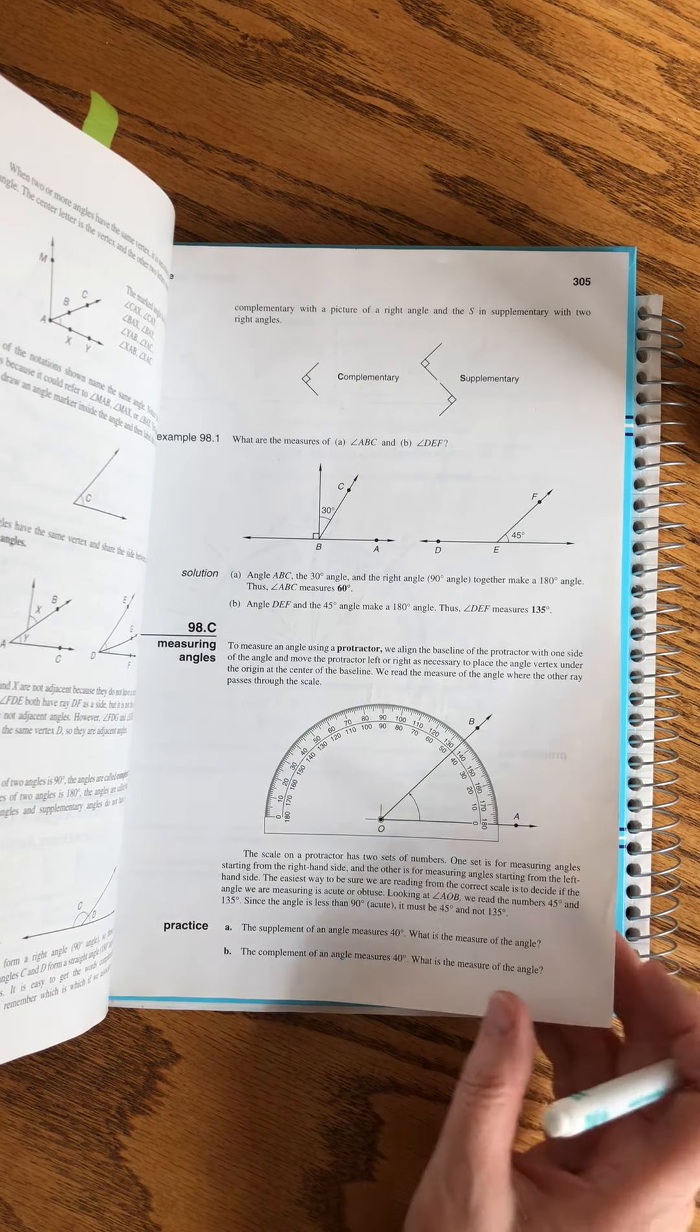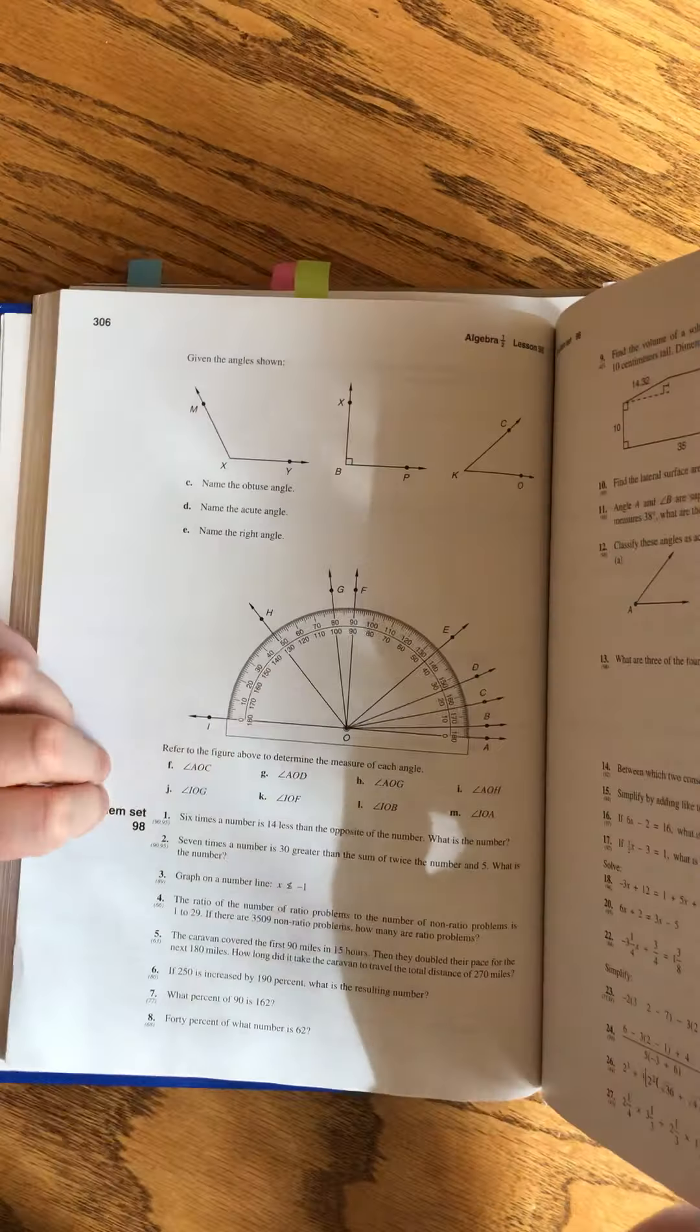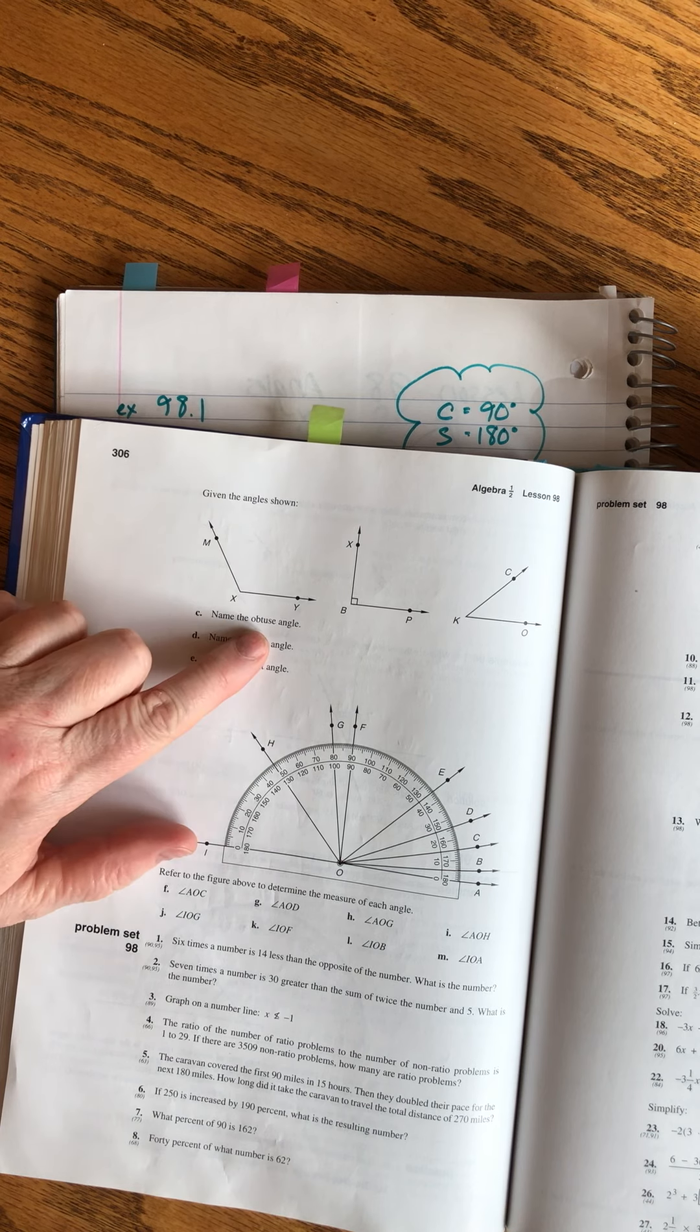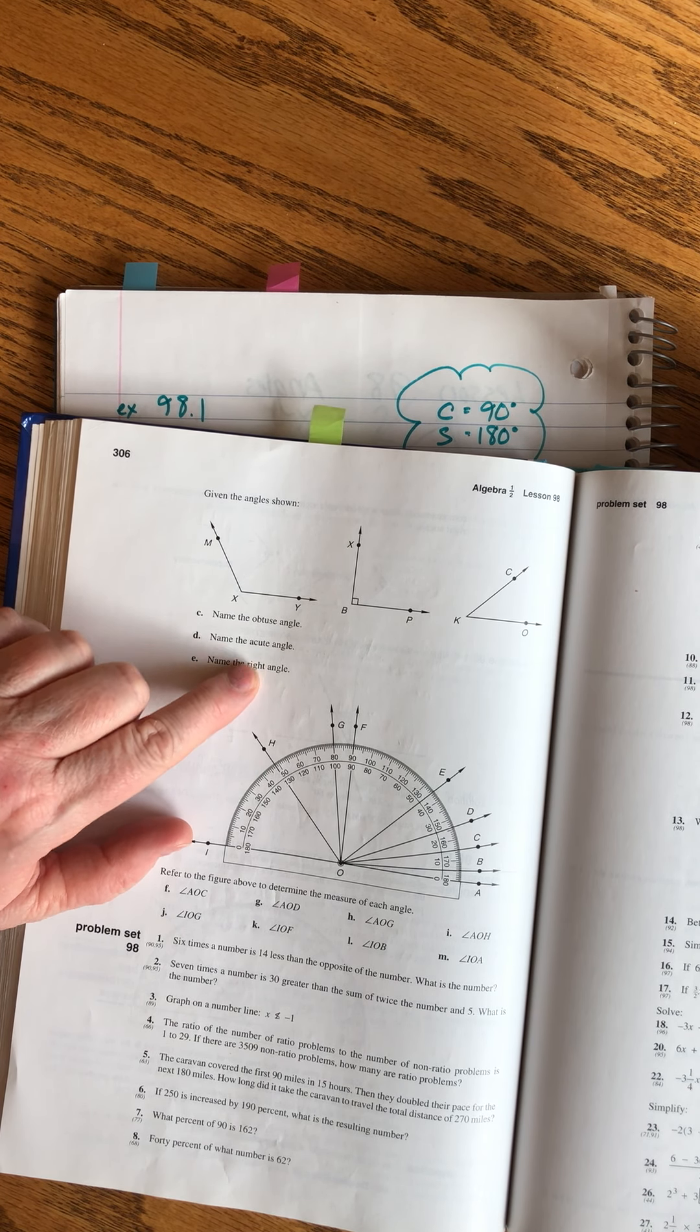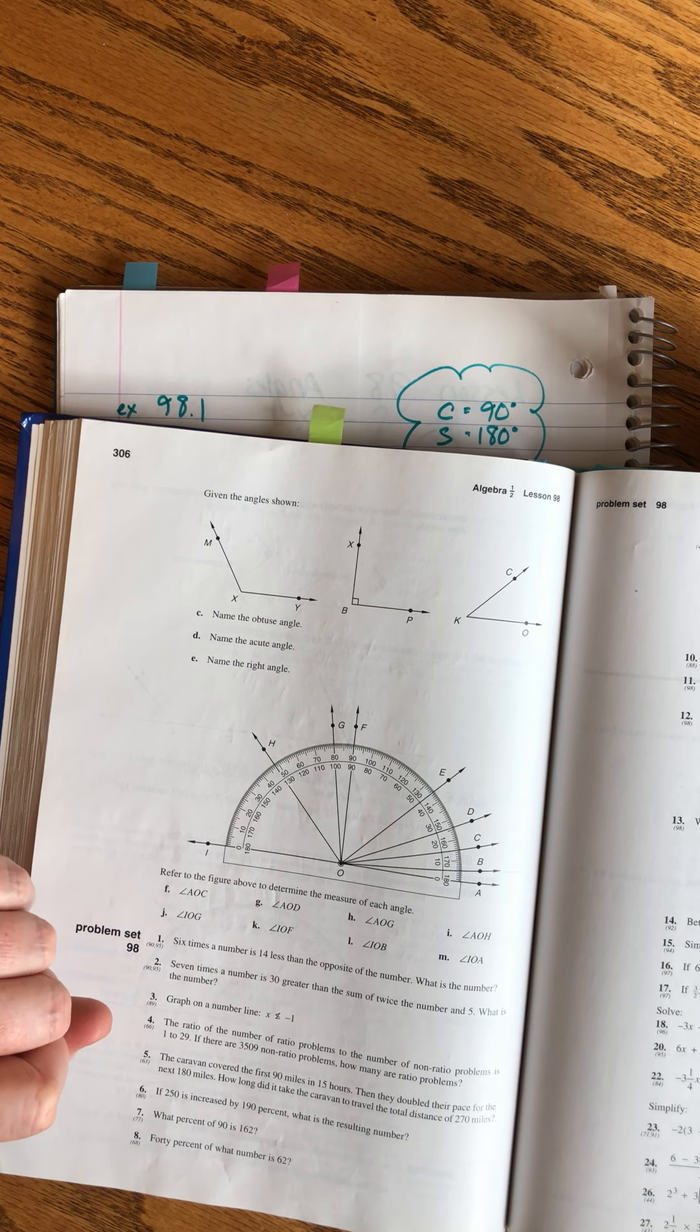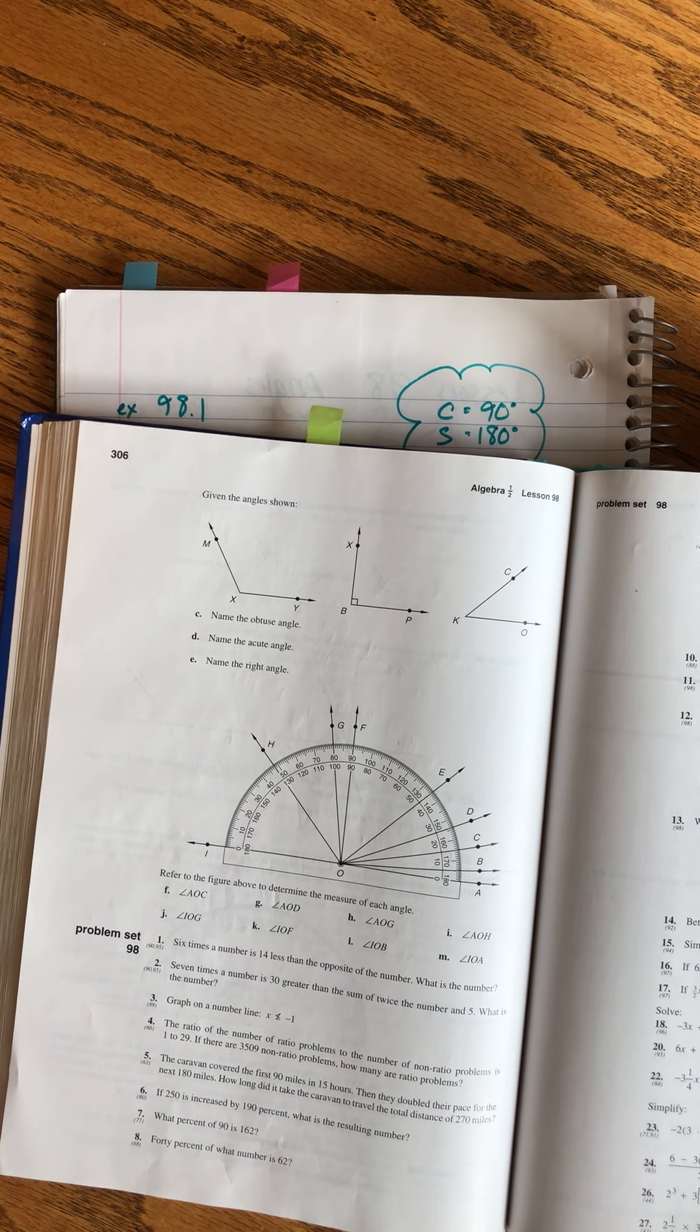Practice problems! Remember, obtuse means greater than 90 degrees. Acute means less than 90 degrees. Right angle means exactly 90 degrees. So, just to help you, that would be the obtuse, that would be the acute and that would be the right angle.